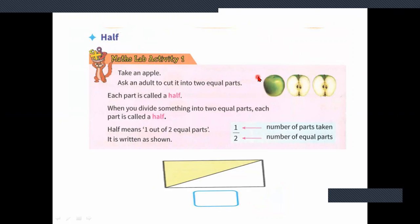If you take an apple and ask to cut it into two equal parts — see here, they are taking an apple and cutting it into two equal parts. Each part is called as half. This part is called as half and this part is also called as half. When you divide something into two equal parts, each part is called as half.